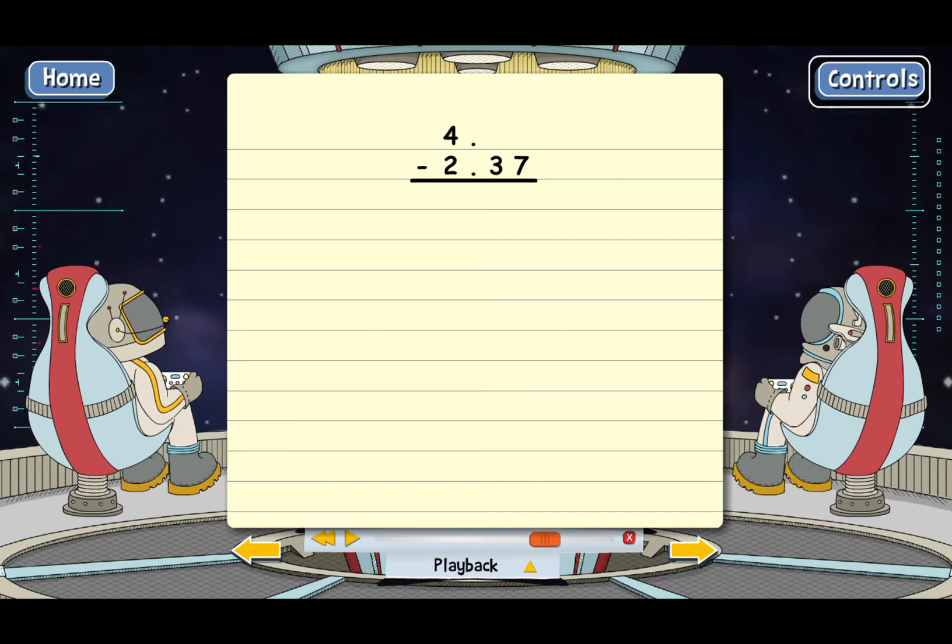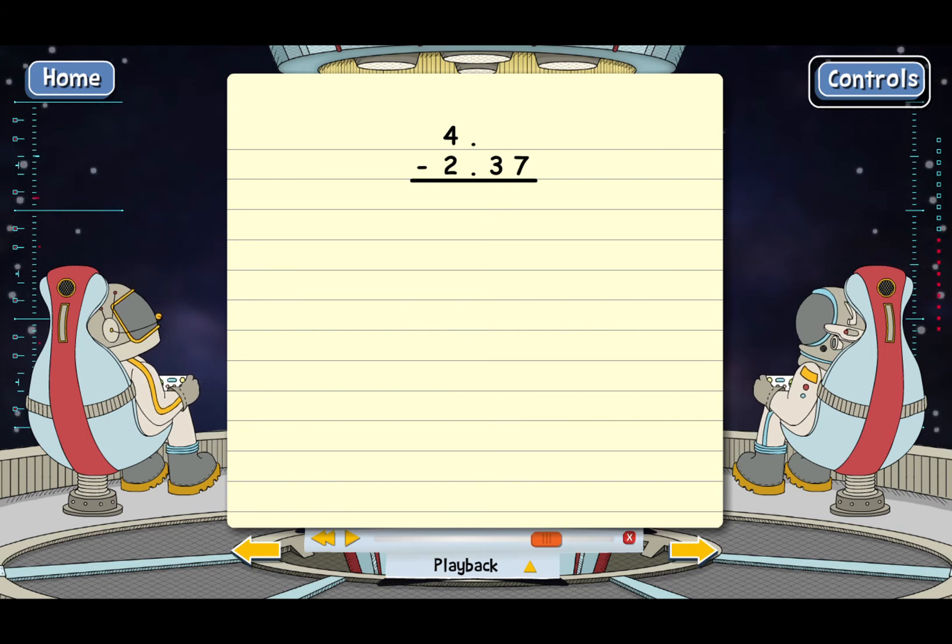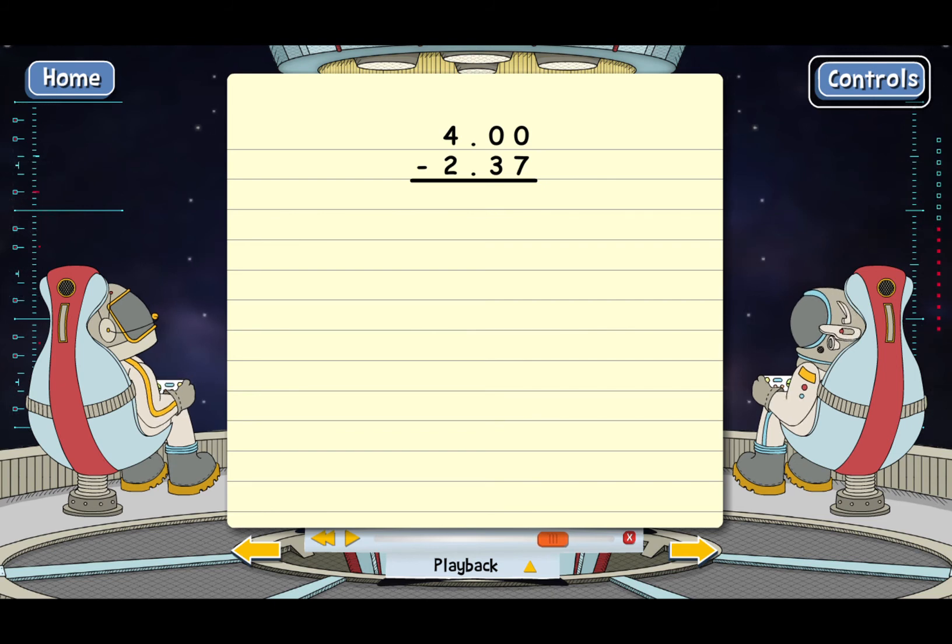We're still not ready to subtract though, because we have some holes. Why don't you fill in the holes the way you're supposed to? Good. Those zeros don't change the value of the number. 4 is actually the same as 4.00.